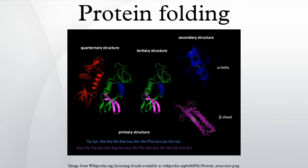Vibrational circular dichroism techniques for proteins, currently involving Fourier transform instruments, provide powerful means for determining protein conformations in solution even for very large protein molecules. Such VCD studies of proteins are often combined with X-ray diffraction of protein crystals, FTIR data for protein solutions in heavy water, or ab initio quantum computations to provide unambiguous structural assignments unobtainable from CD.